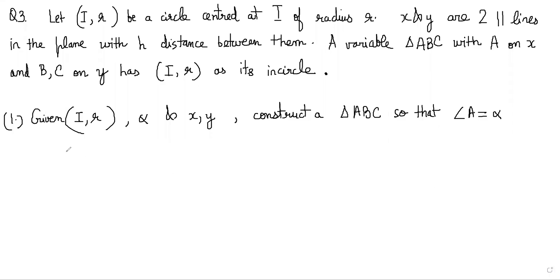This is question number three of our geometry problem-solving series. Let IR be a circle centered at I having radius R. X and Y are two parallel lines with a distance of H between them. A variable triangle ABC with A on X and BC on Y has IR as its incircle.